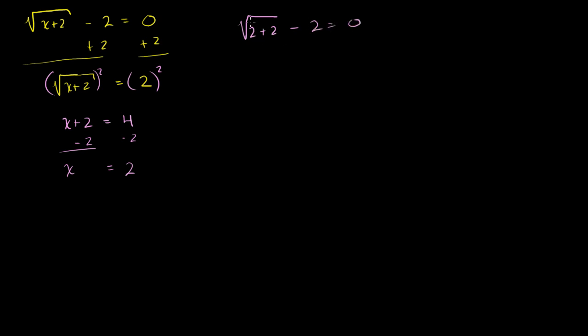This is 4. The principal root of 4 is 2. 2 minus 2 does indeed equal 0. So this is a valid solution. It's not an extraneous solution. It works with the principal root.